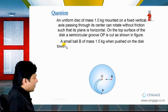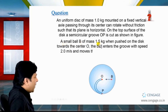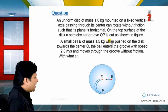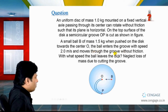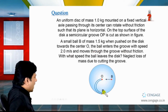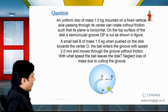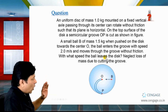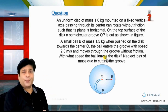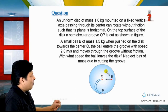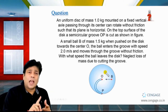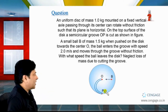In the next part of the question, a small ball B of mass 1.5 kg is pushed onto the disc towards center O. It enters the groove and moves in the groove without friction, then leaves the disc. We need to calculate the speed of the ball when it leaves the disc, and we neglect mass loss due to cutting of the groove. So we consider the disc as a complete uniform disc having moment of inertia mr²/2 about the axis passing through O.